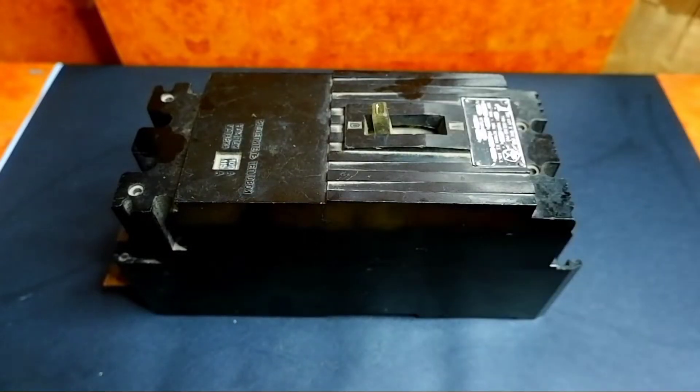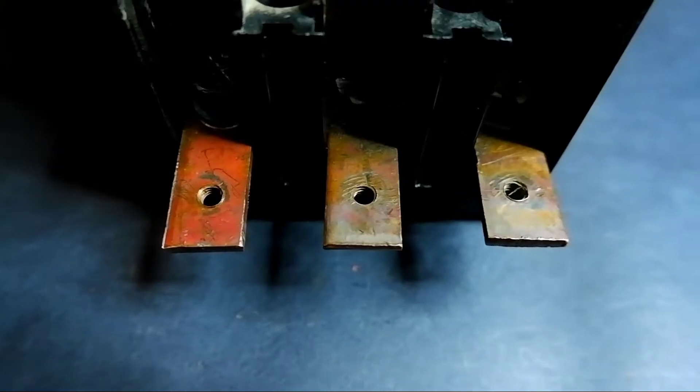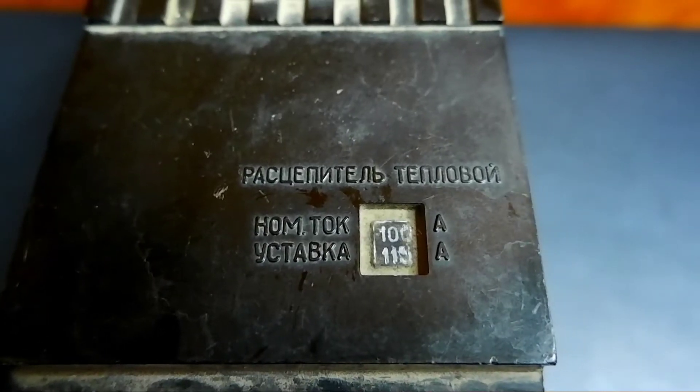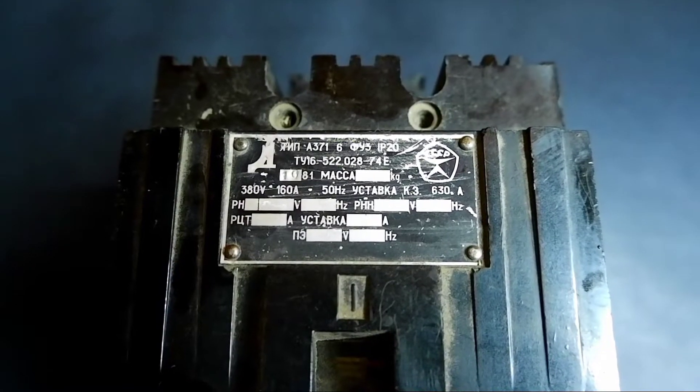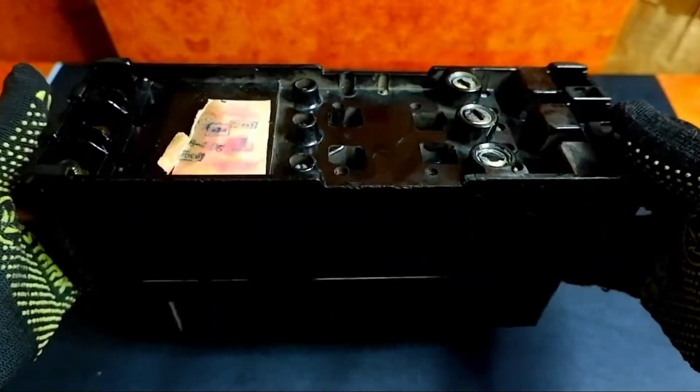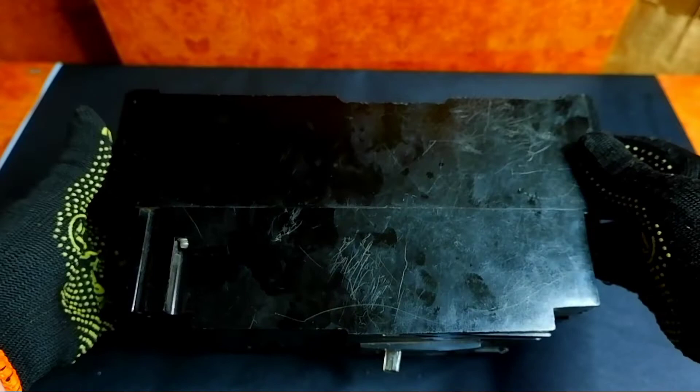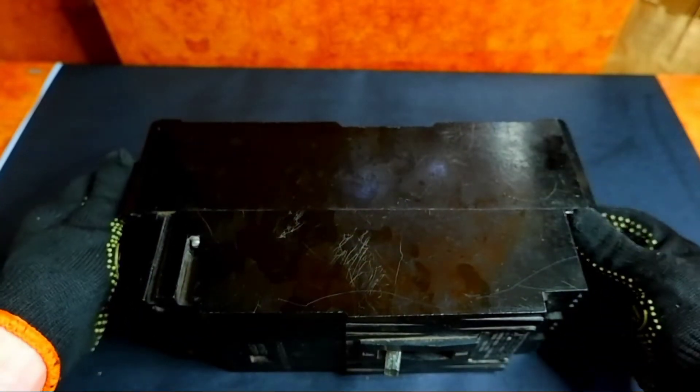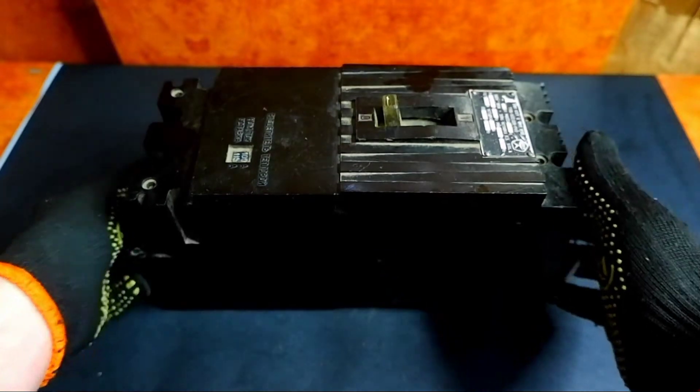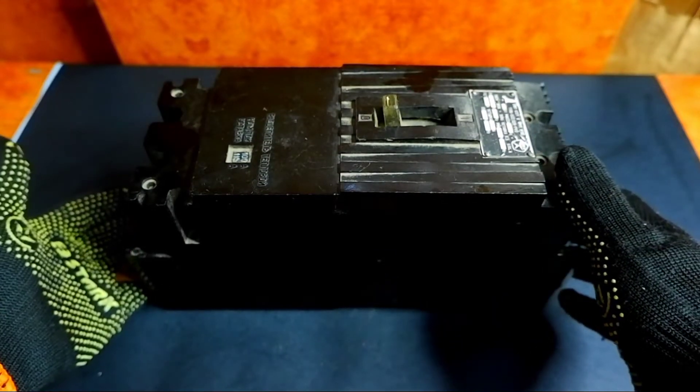Hello my friends, today for the video I got such a huge electrical device. I have never opened such a device, and I myself am very interested in how much non-ferrous metals it contains. There should be a lot of copper, and also there should be brass and silver contacts. Friends, the video will be very interesting so be sure to watch it to the end. I wish you a pleasant viewing.